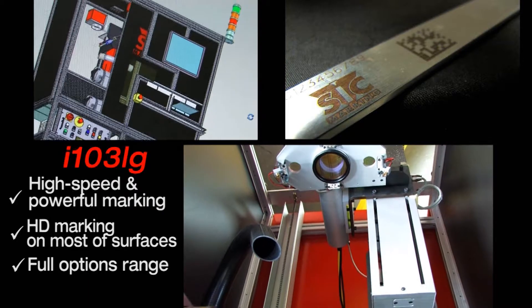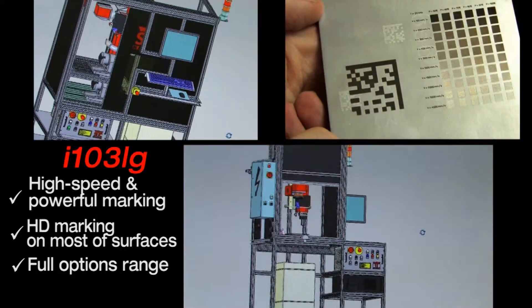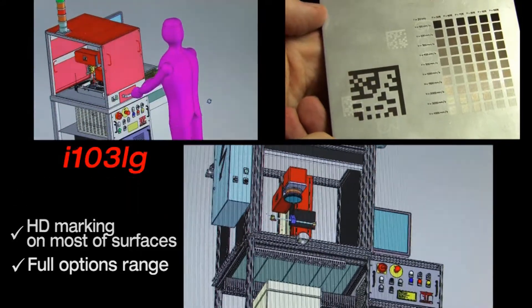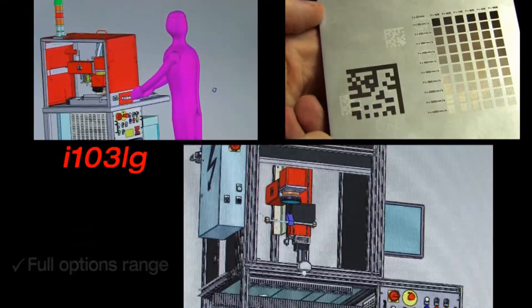With the i103LG fiber laser you can mark high definition text, logo, or data matrix within seconds on most steel parts.